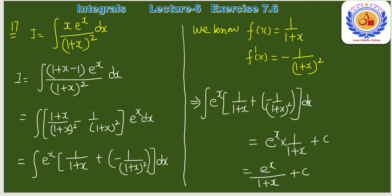Question number 17: ∫x·eˣ/(1+x)² dx। x की जगा (1+x) − 1 लिख दिया। Separate: (1+x)/(1+x)² − 1/(1+x)² = 1/(1+x) − 1/(1+x)²। So ∫eˣ·[1/(1+x) − 1/(1+x)²]dx।